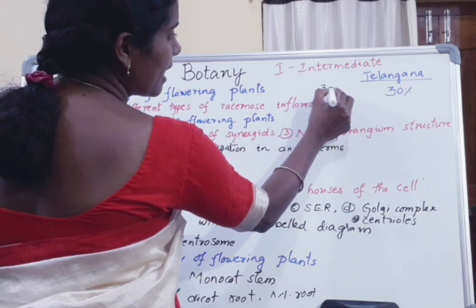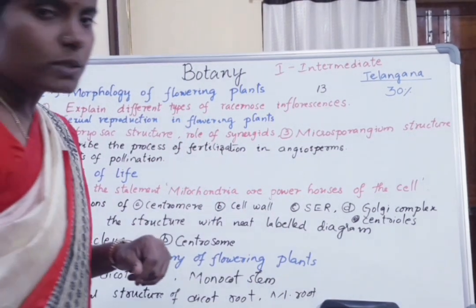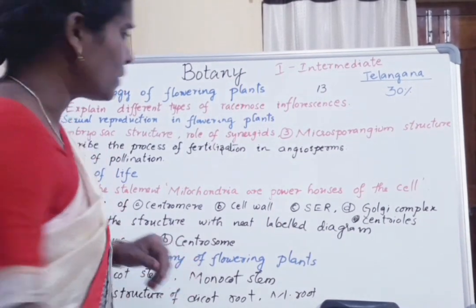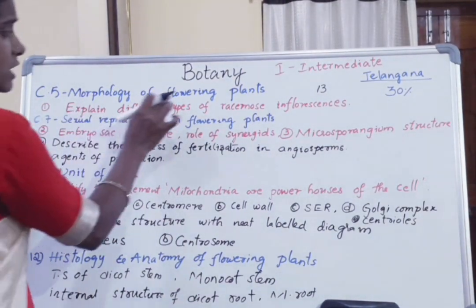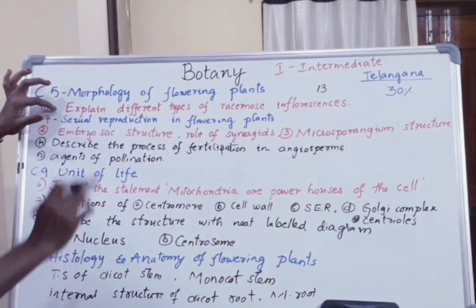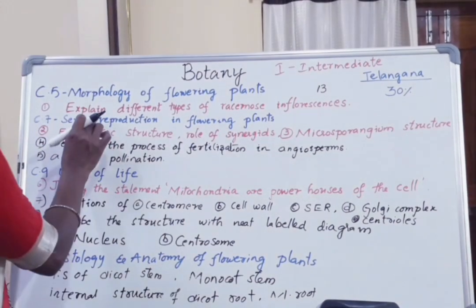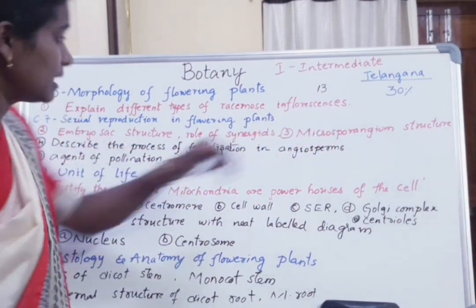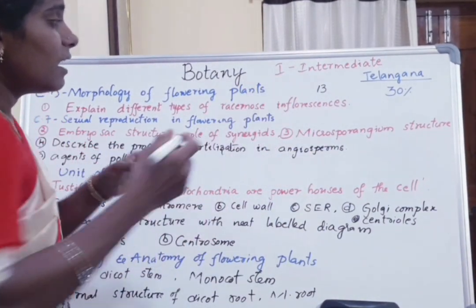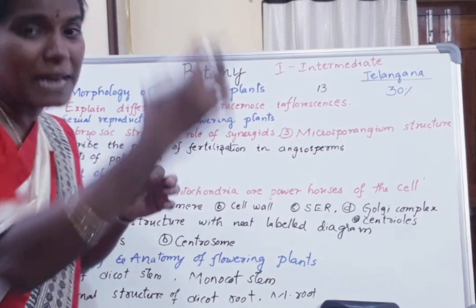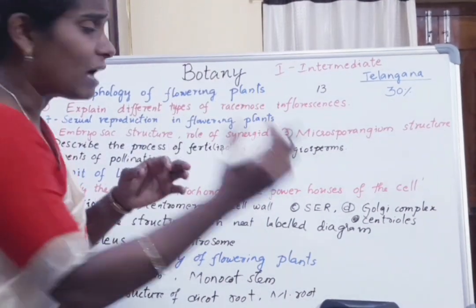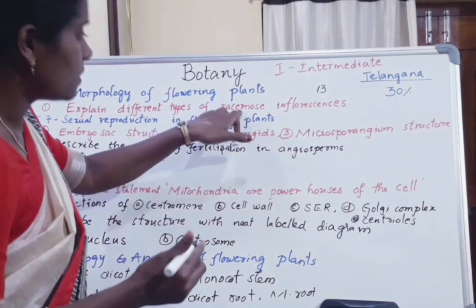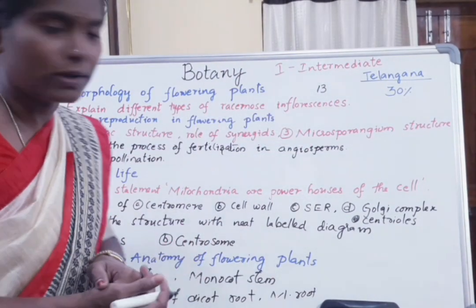Total 1st year chapters in botany are 13. Starting 4 chapters have very short and short answers only. From the 5th chapter, morphology of flowering plants, the important question is: explain different types of racemose and cymose inflorescences — how the flowers are arranged on a plant. Racemose and cymose are the two types, and racemose is a very important one.